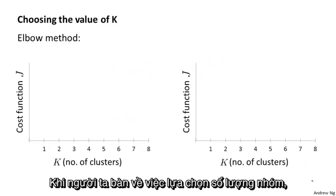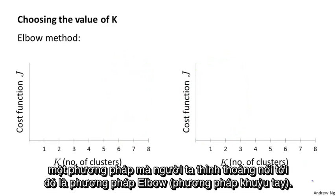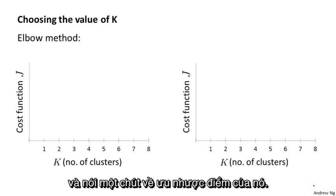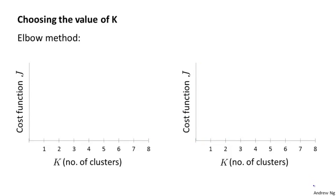When people talk about ways of choosing the number of clusters, one method that people sometimes talk about is something called the elbow method. Let me just tell you a little bit about that, and then mention some of its advantages, but also shortcomings.